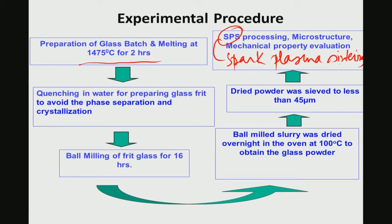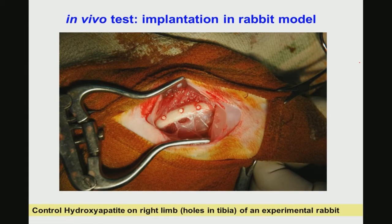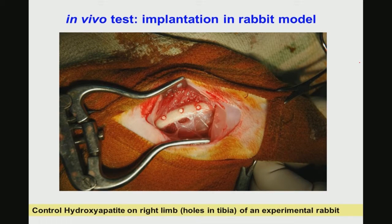Once you obtain the sintered material — whether by conventional sintering or spark plasma sintering — the next step is ceramizing treatment, which will develop the crystalline phases in the glass matrix. Without spending much time on physical properties, I will restrict this module to the in vivo biocompatibility of these materials.